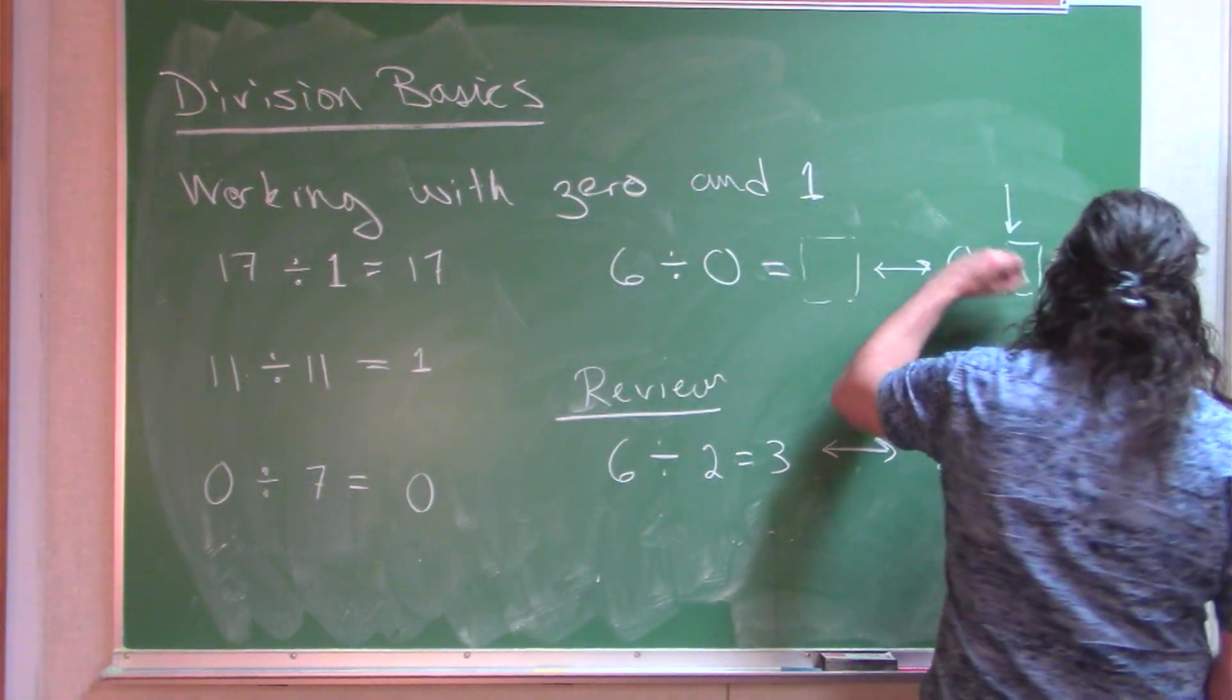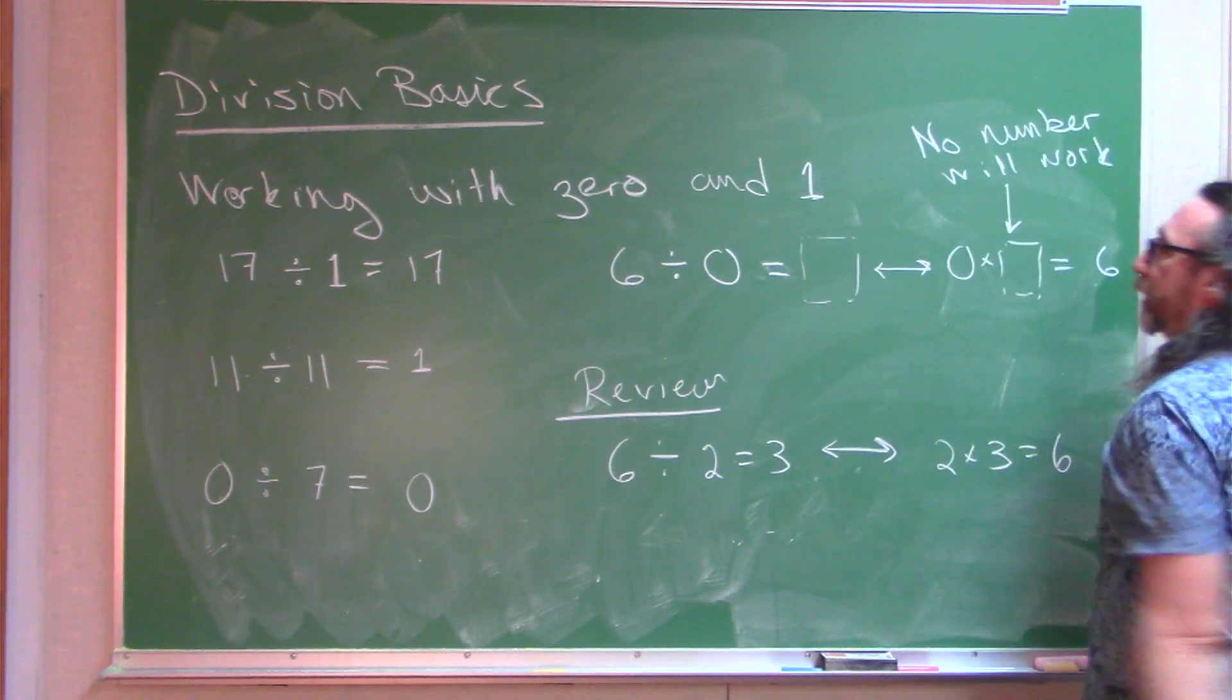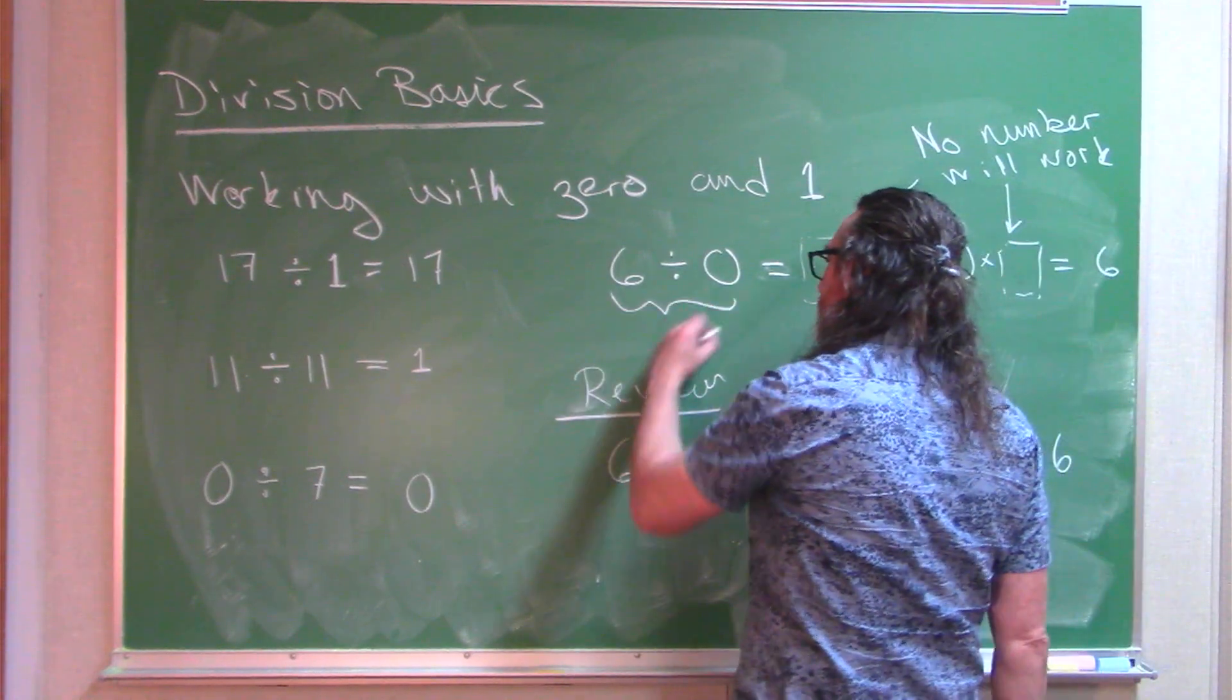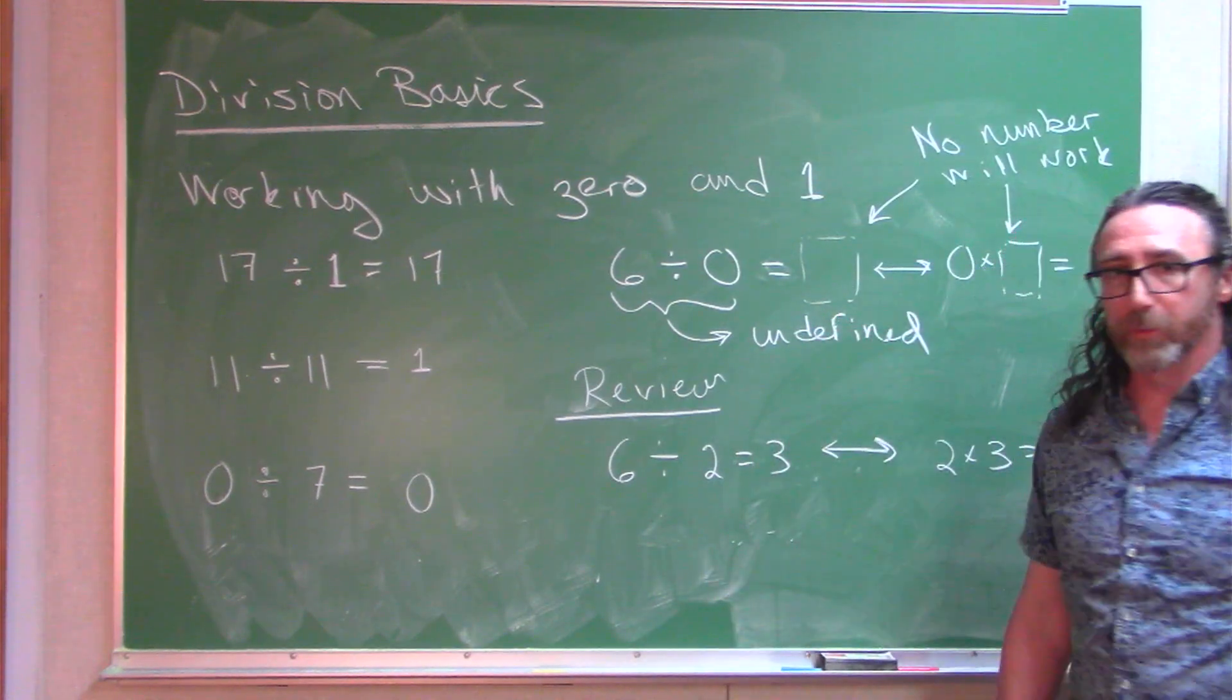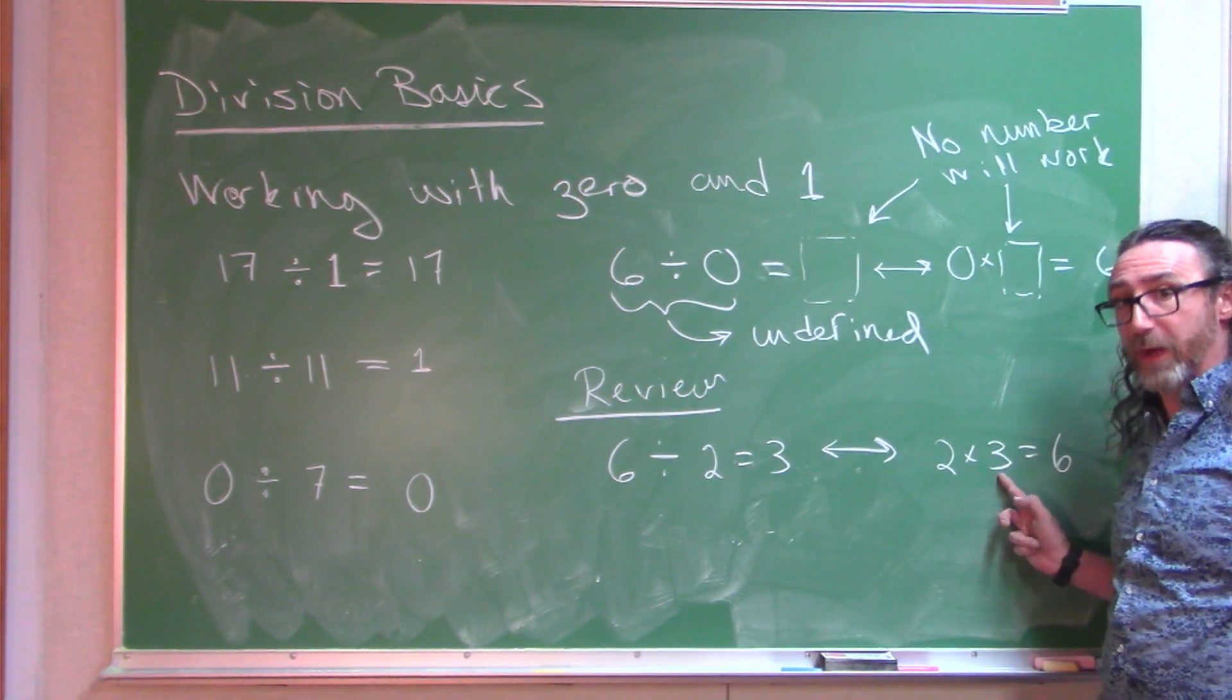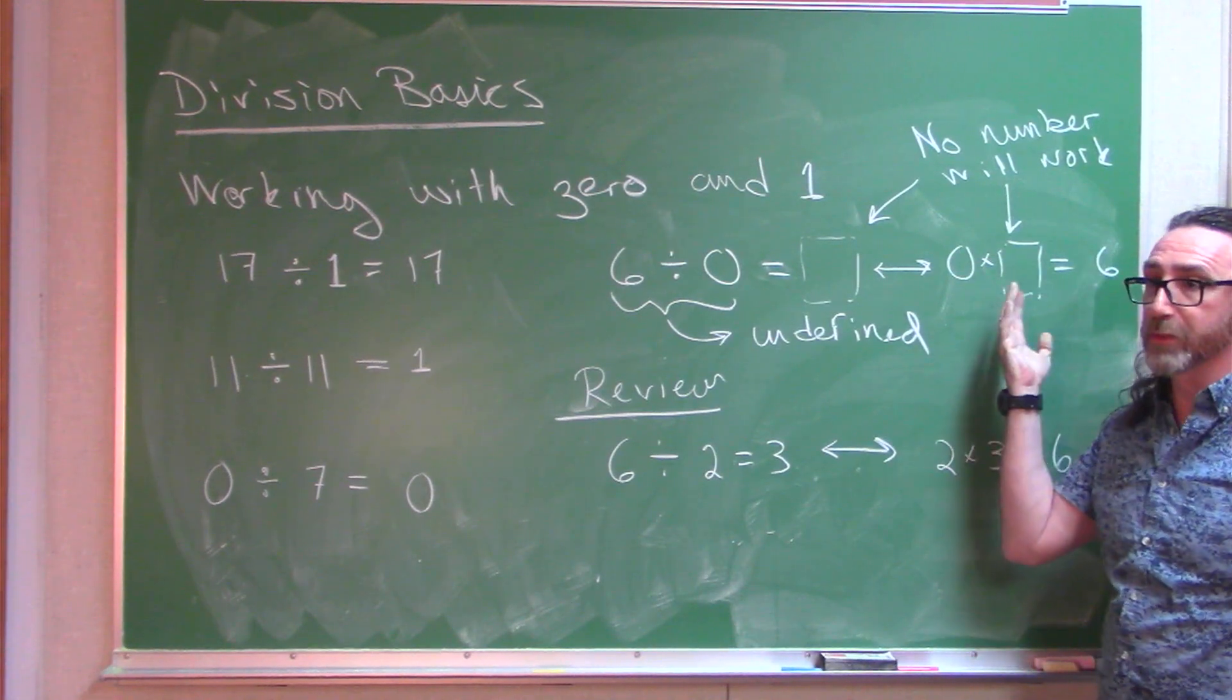There is nothing I could fill in in that blank to make a true statement. So no matter what number we pick it won't work. No number will work. No number will work in this blank. So there is no number that will work in that blank either. Division by 0 is undefined. Division by 2 is great because you can find a number that you can fill in there to hit your target. But if you're talking about 0, there's no way to hit this target because anything times 0 is 0. So you're kind of stuck.